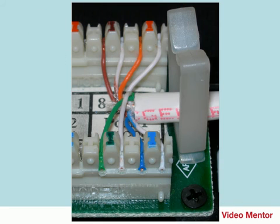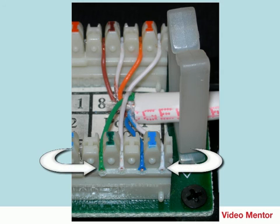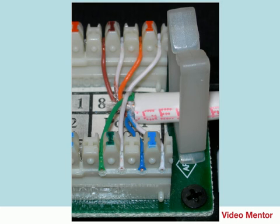Let's zoom in on the finished wiring. Here you can see that the PVC jacket is very close to the edge of the wires — there's maybe a quarter to a half inch of exposed wires. Each wire is punched all the way down to the bottom of the IDC connector, and it's trimmed off — the cut side of that tool trimmed off the end, so it's a nice clean connection.